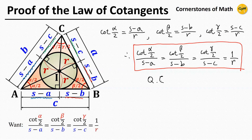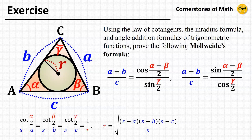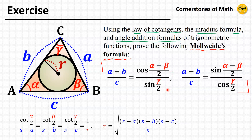So we have proved the law of cotangents. And let's also solve this exercise problem. It says: using the law of cotangents we just proved, the in-radius formula, and angle addition formulas of trigonometric functions, prove the following Mollweide's formulas. There are actually two of them: (A plus B) divided by C equals cosine((alpha minus beta)/2) divided by sine(gamma/2), and (A minus B) divided by C equals sine((alpha minus beta)/2) divided by cosine(gamma/2).